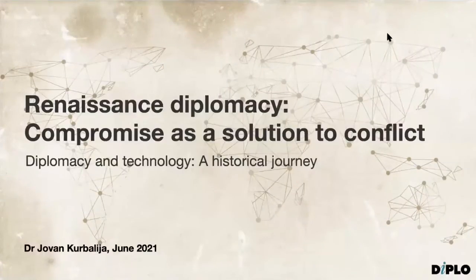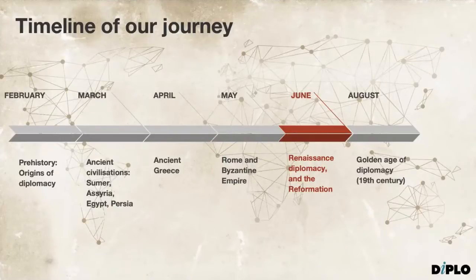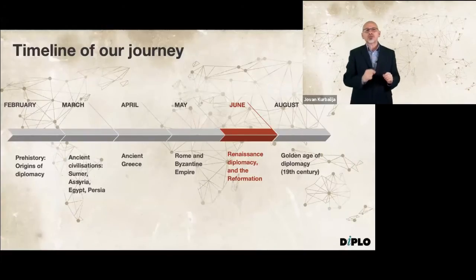Welcome to the next stop on our historical journey on history of diplomacy and technology. Our next stop is Renaissance diplomacy. We travel through different epochs from prehistory and first forms of proto-diplomacy through early civilization of ancient East, Mesopotamia, Egypt, and their invention of writing to ancient Greece with its rich legacy, Rome, and Byzantine Empire most recently. And we will link our last session with this one by Harold Nicholson's words.